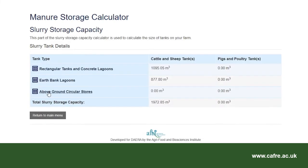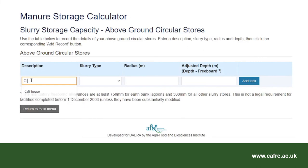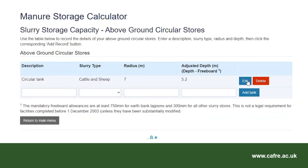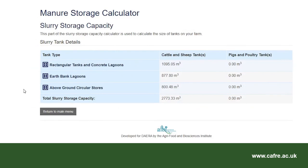Finally, select above ground circular stores. The circular tank is used for dairy cow slurry, so I will select cattle and sheep from the slurry drop-down box. It has a radius of 7m and an adjusted depth of 5.2m. The adjusted depth is calculated by subtracting 300mm from the total depth. Select add tank and then select return to main menu. When all of the information regarding slurry tanks has been entered, select return to main menu.